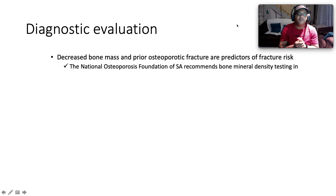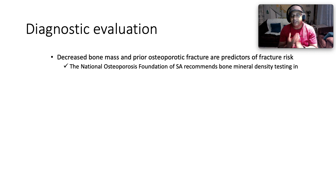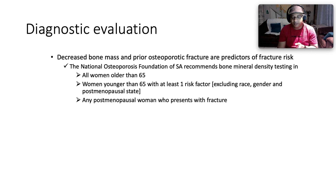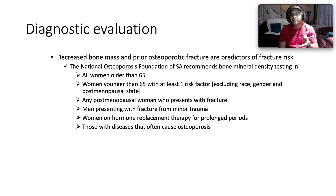How do you work up someone you suspect has osteoporosis? Decreased bone mass on DEXA scan and prior osteoporotic fragility fractures are big predictors of fracture risk. NOFSA — the National Osteoporosis Foundation of South Africa — recommends bone density testing in all women older than 65, and women younger than 65 with at least one risk factor, excluding race, gender, and postmenopausal status.